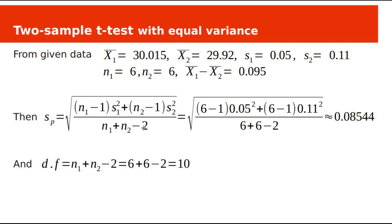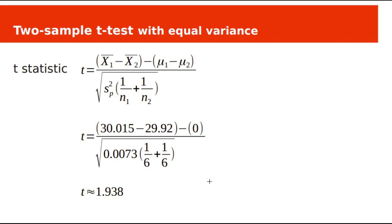To calculate the t-statistic we need the pooled standard deviation SP. Substituting the data into the formula, SP equals 0.08544. For the critical value we need degrees of freedom, which is n1 plus n2 minus 2, giving a value of 10. The t-statistic is the difference of sample means minus the difference in population means, divided by the square root of pooled variance multiplied by (1/n1 plus 1/n2). Substituting values gives a t-statistic of approximately 1.938.